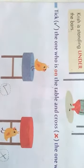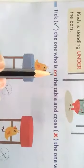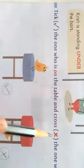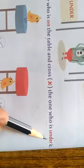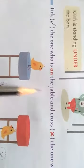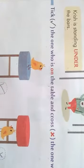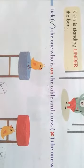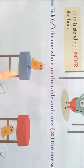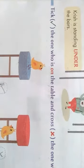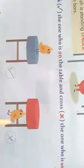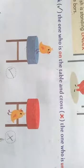Look at the question. Tick the one who is on the table and cross the one who is under. Which bird is on the table? Yes, this one — put the tick. Which bird is under the table? This one — put the cross.